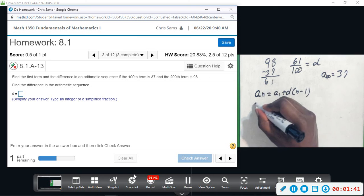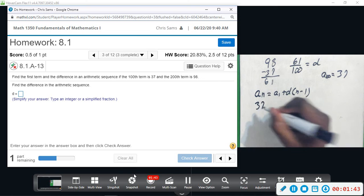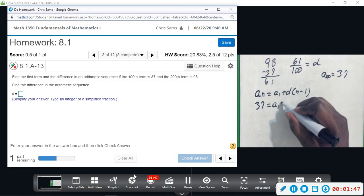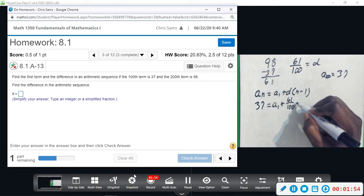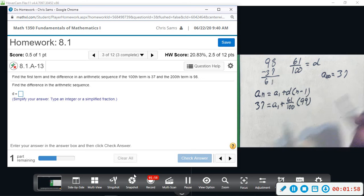So this is going to be 37 equals a_1, which we do not know. The difference is 61 over 100, and then this is going to be times 99. So we're going to compute this and then subtract that from 37.